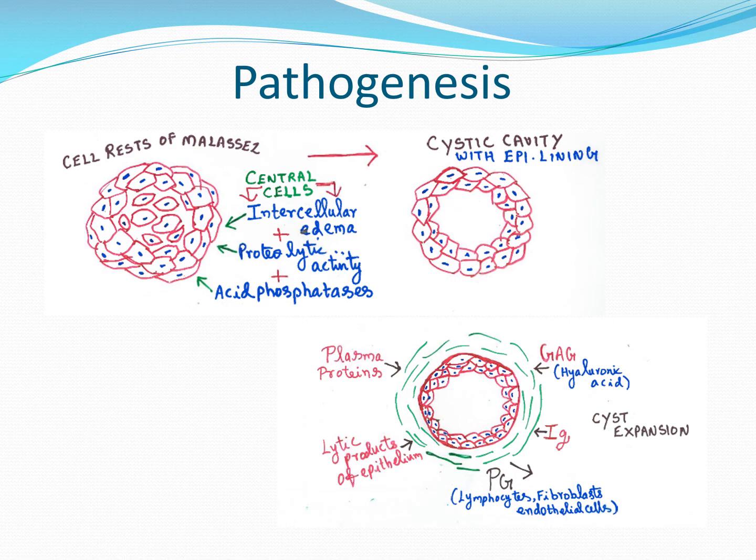When the central cells undergo necrosis, the central part of the epithelial island becomes the cystic lumen. As the island expands, the central cells — devoid of nutrition — undergo necrosis by proteolytic action. This creates a cavity, forming the cyst. The surrounding peripheral cells automatically become the epithelial lining, as seen in the diagrams.